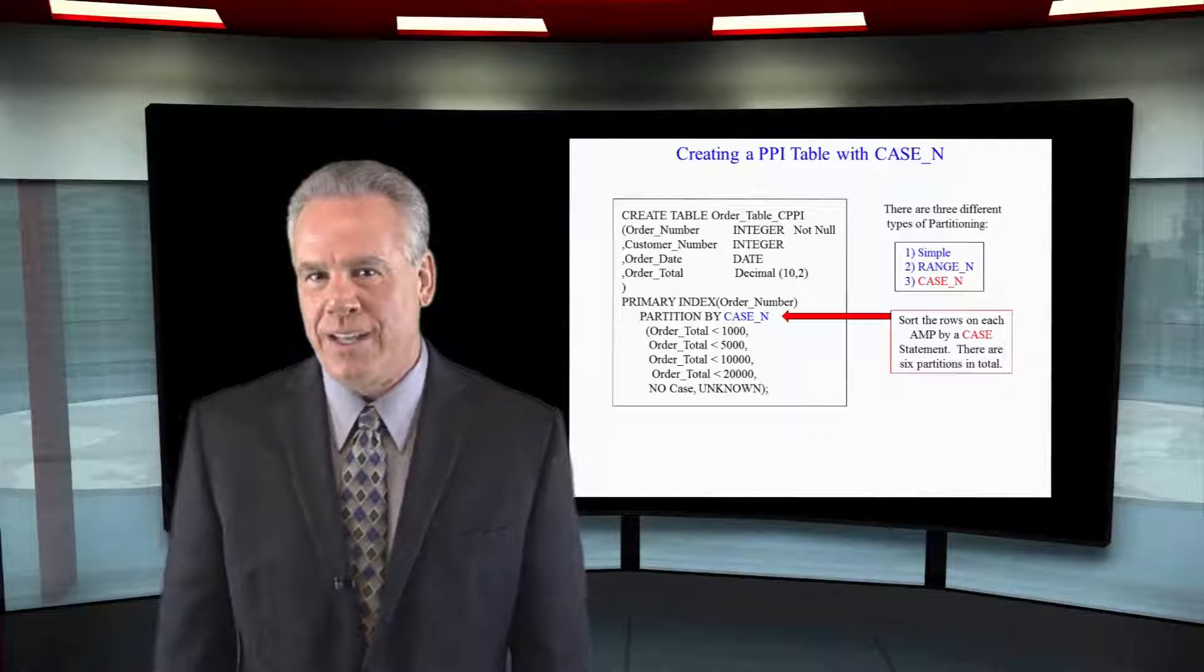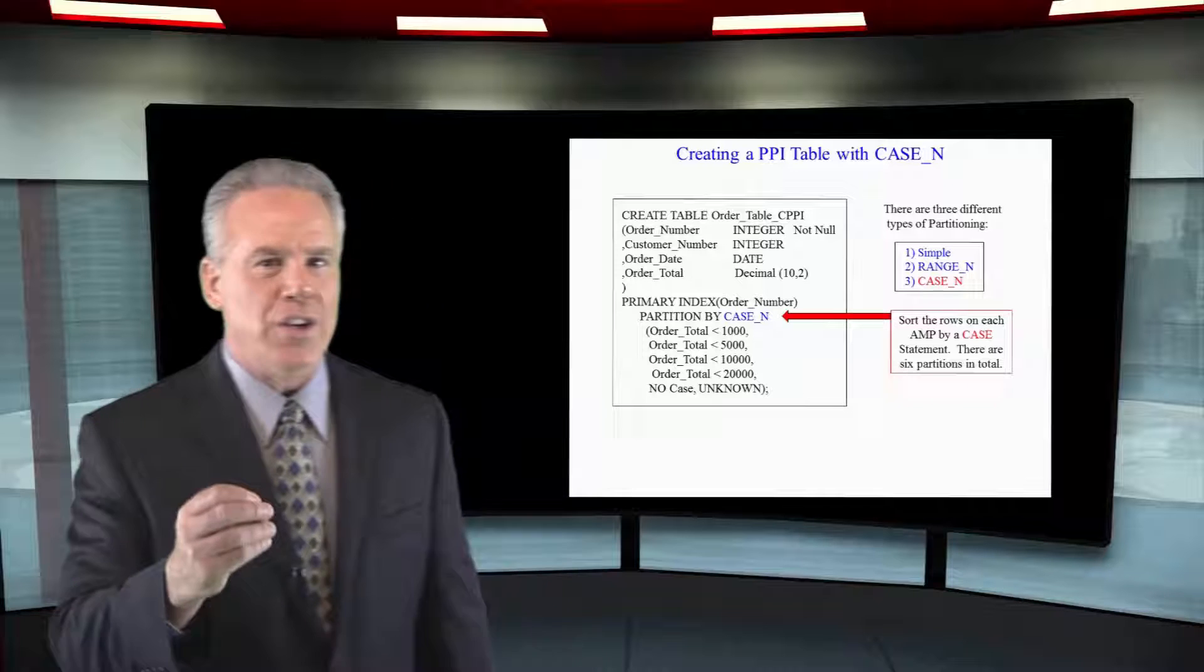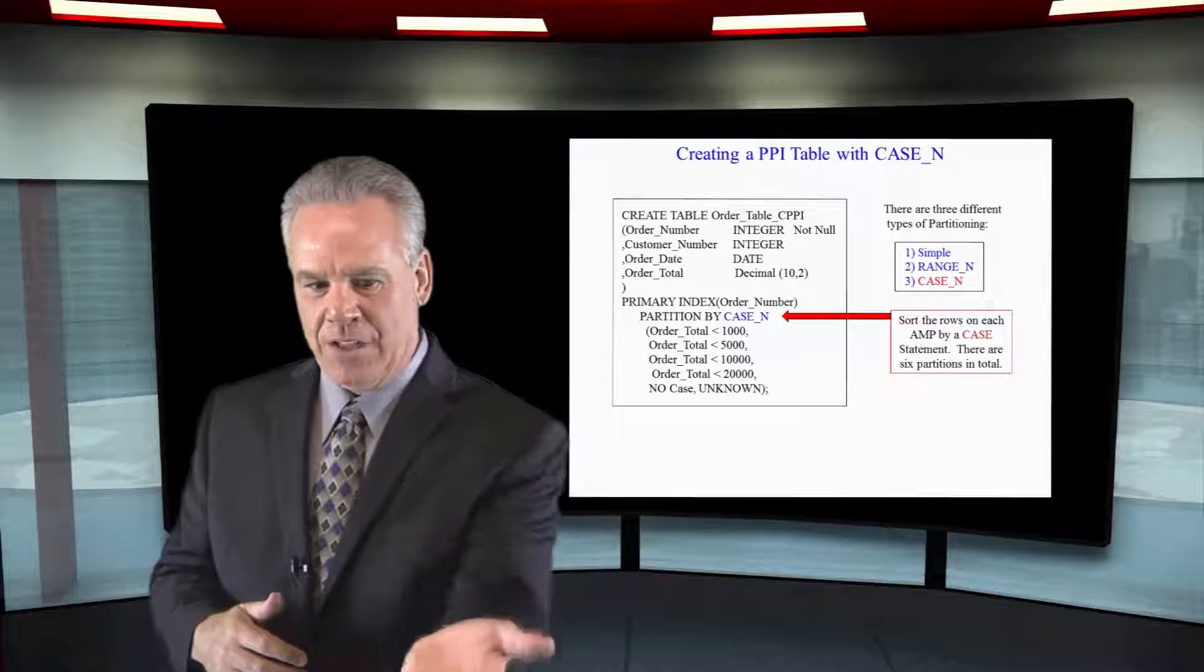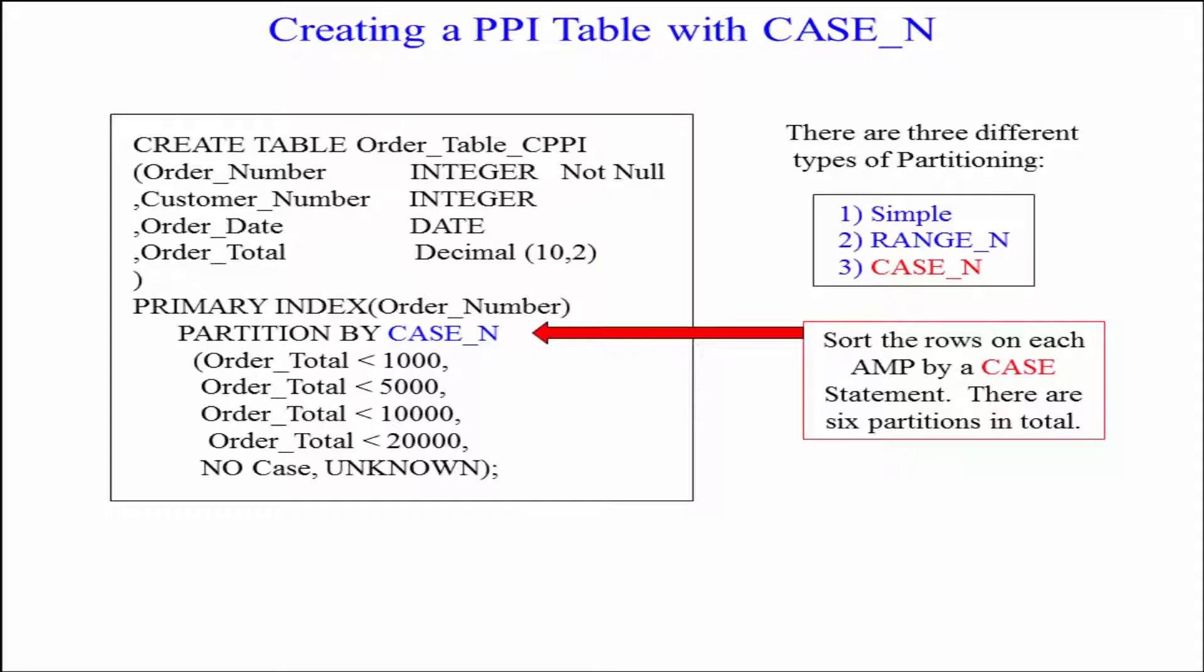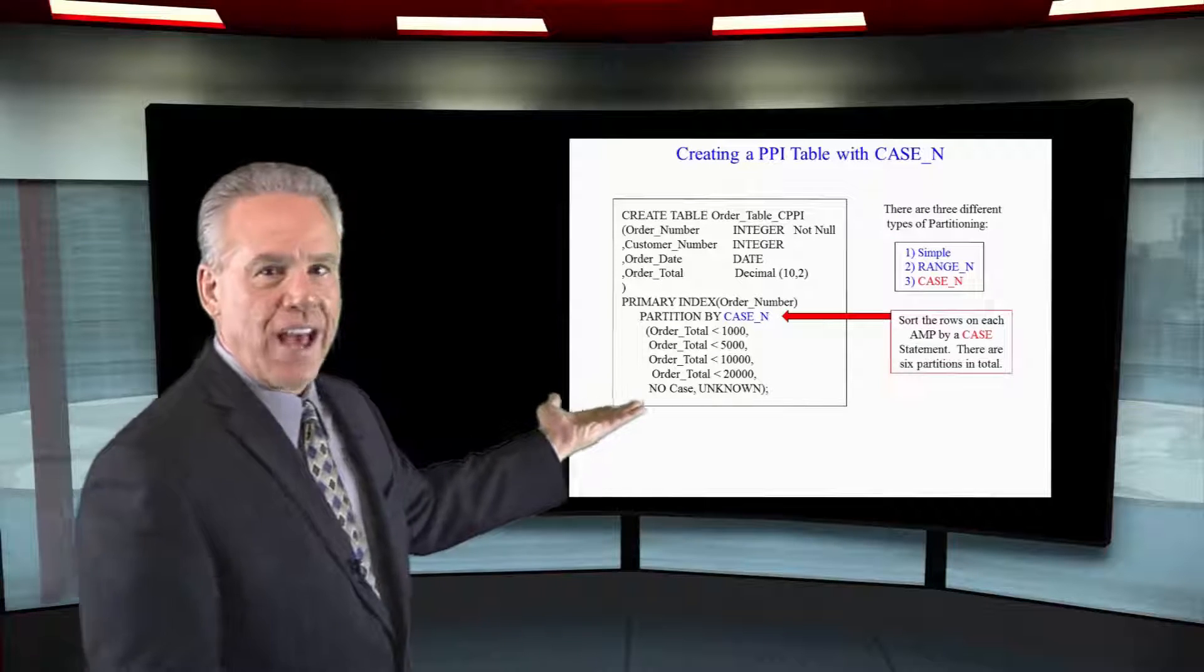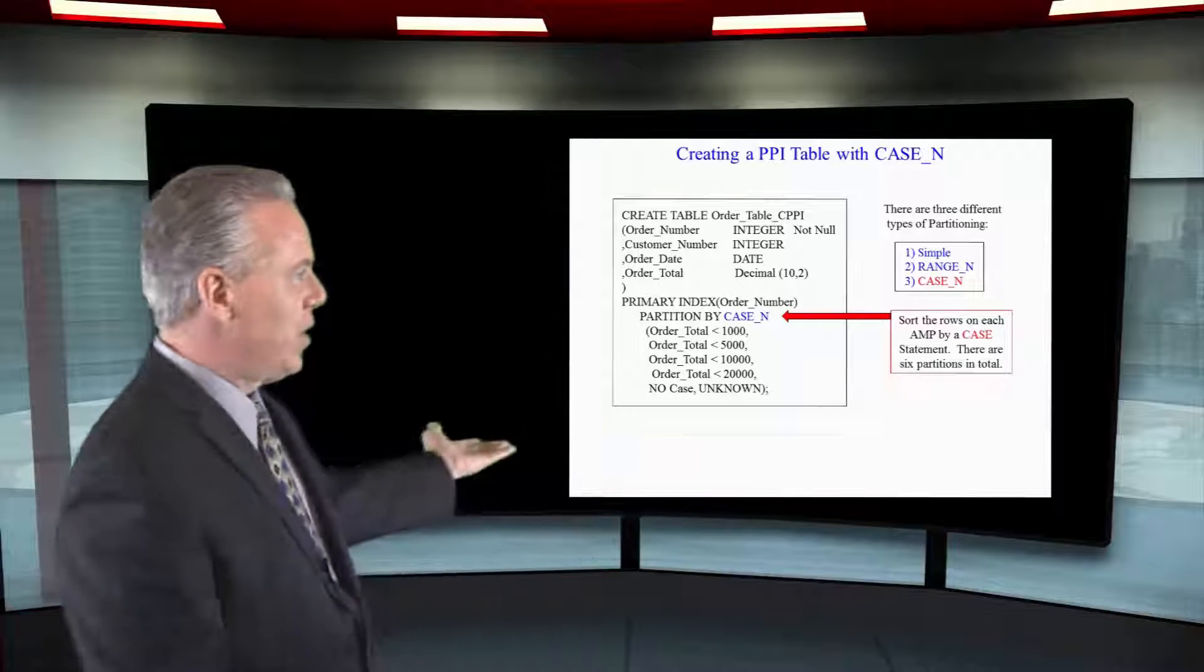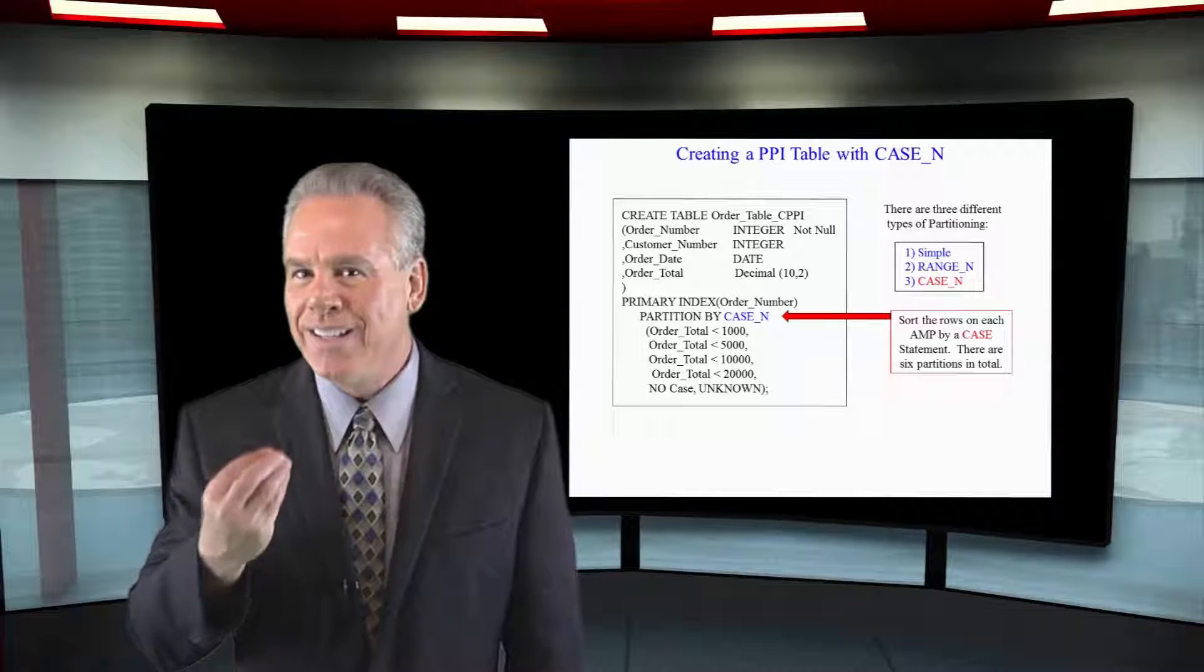We've seen partition primary index tables that use simple partitioning, partition by Depno. We've seen where they use the RANGE_N and I want to partition by each month. Now we're going to use a CASE_N partitioning. And in this PPI table, we're saying I want you to do a CASE_N on the order total. And it's almost like writing a case statement to say, if the orders are less than a thousand, they're going in partition one. This will partition things the way we see fit.